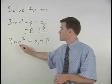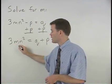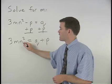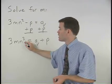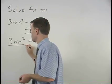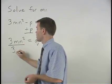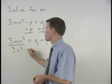Notice that since m is being multiplied by 3 and also multiplied by n squared, we can get m by itself by dividing both sides of the equation by 3n squared.